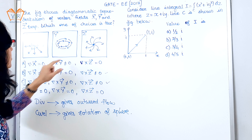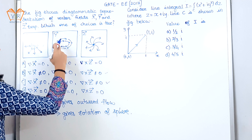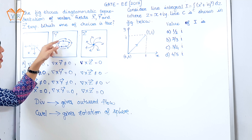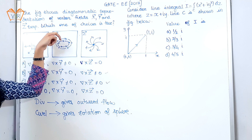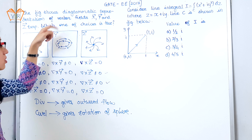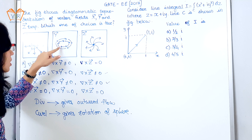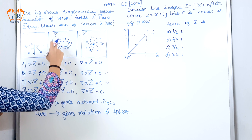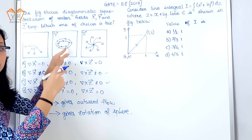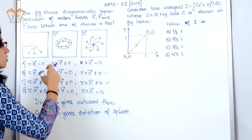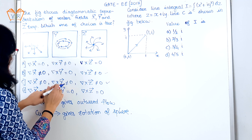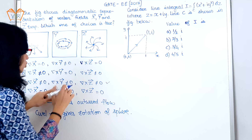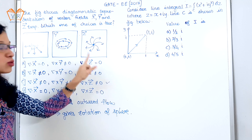Moving on to the next one. Divergence here is equal to zero because the arrow is indicated inside — it is not in the outward direction. But curl is not equal to zero because this shows the rotation of the fluid or sphere. So option B is not valid now.